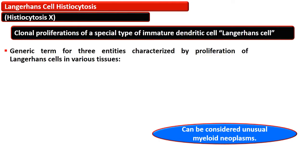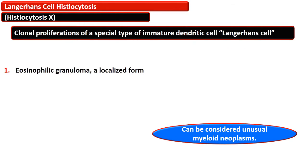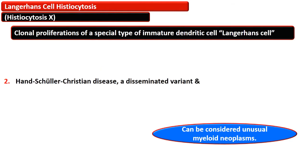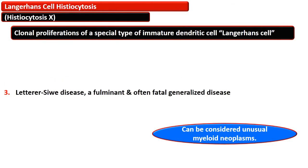This term is a generic term for three entities characterized by proliferation of Langerhans cells in various tissues. First among these is eosinophilic granuloma, which is a localized form. Another is Hand-Schüller-Christian disease, which is a disseminated variant. The third is Letterer-Siwe disease, which is a fulminant, often fatal, and generalized disease.